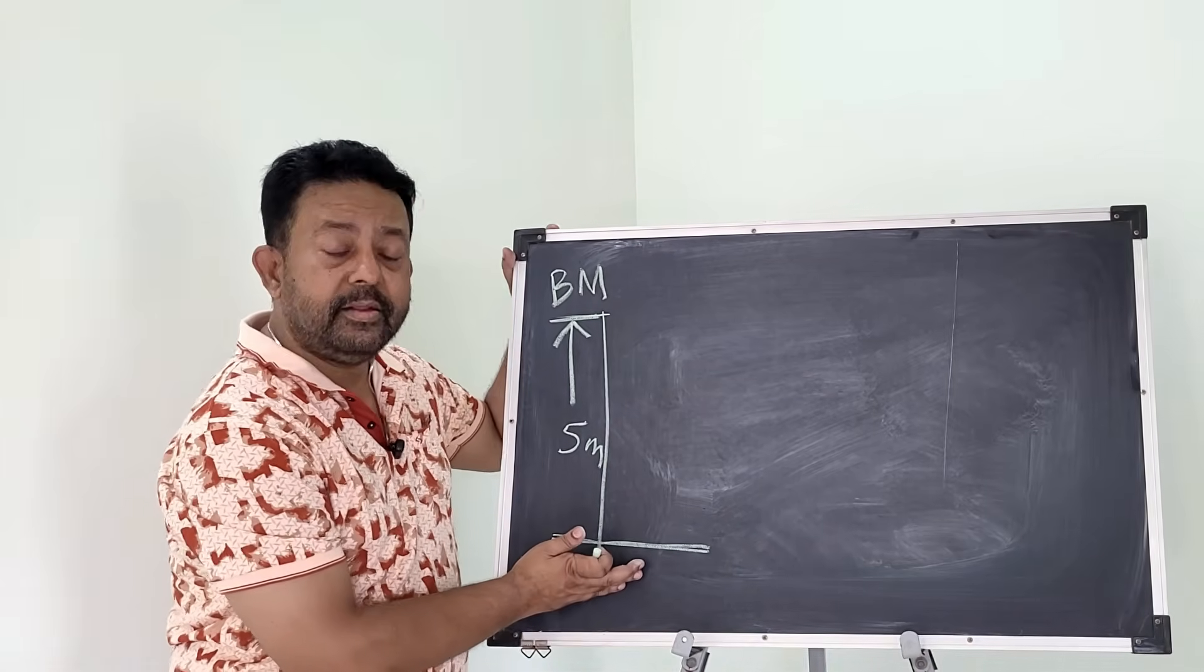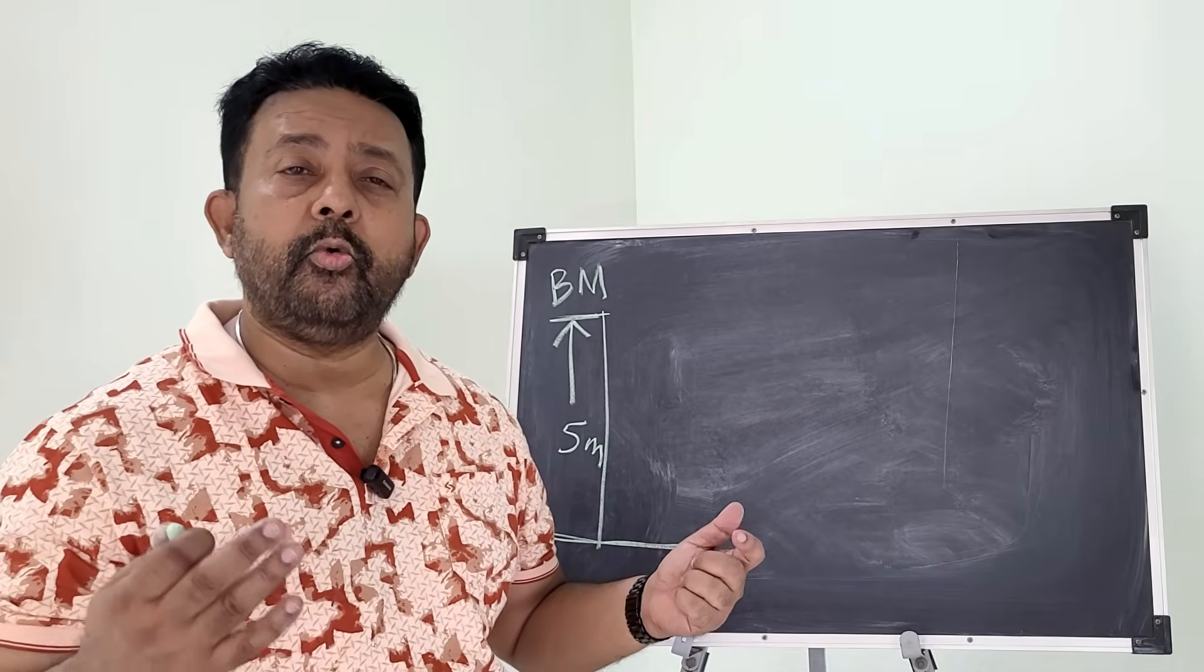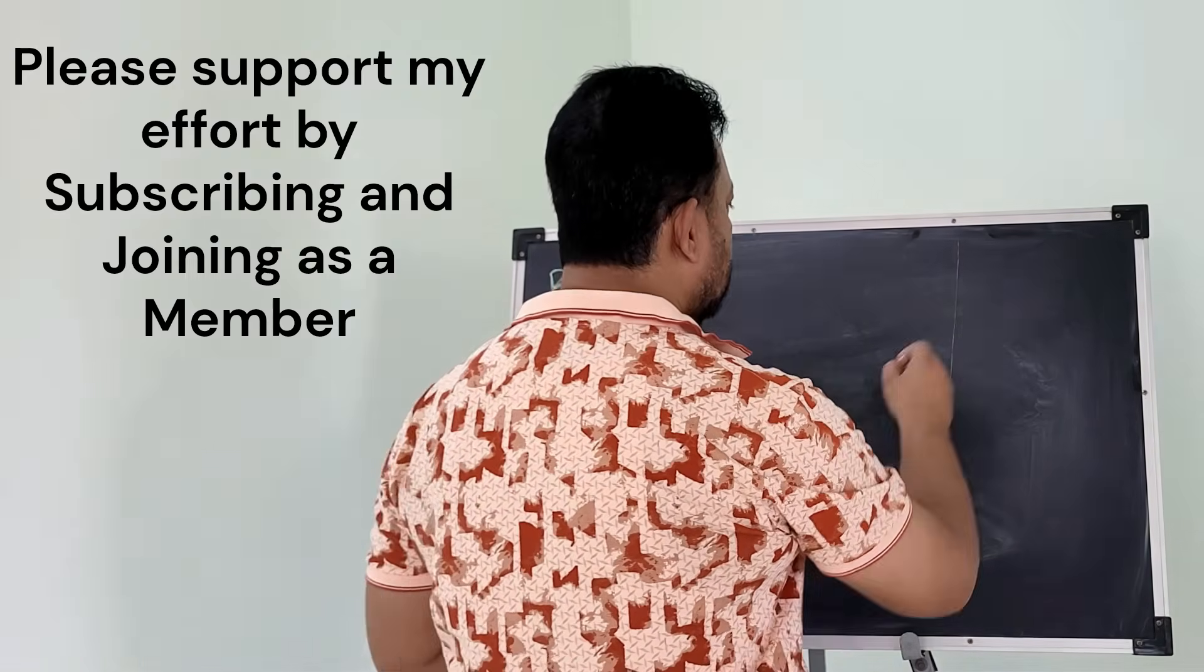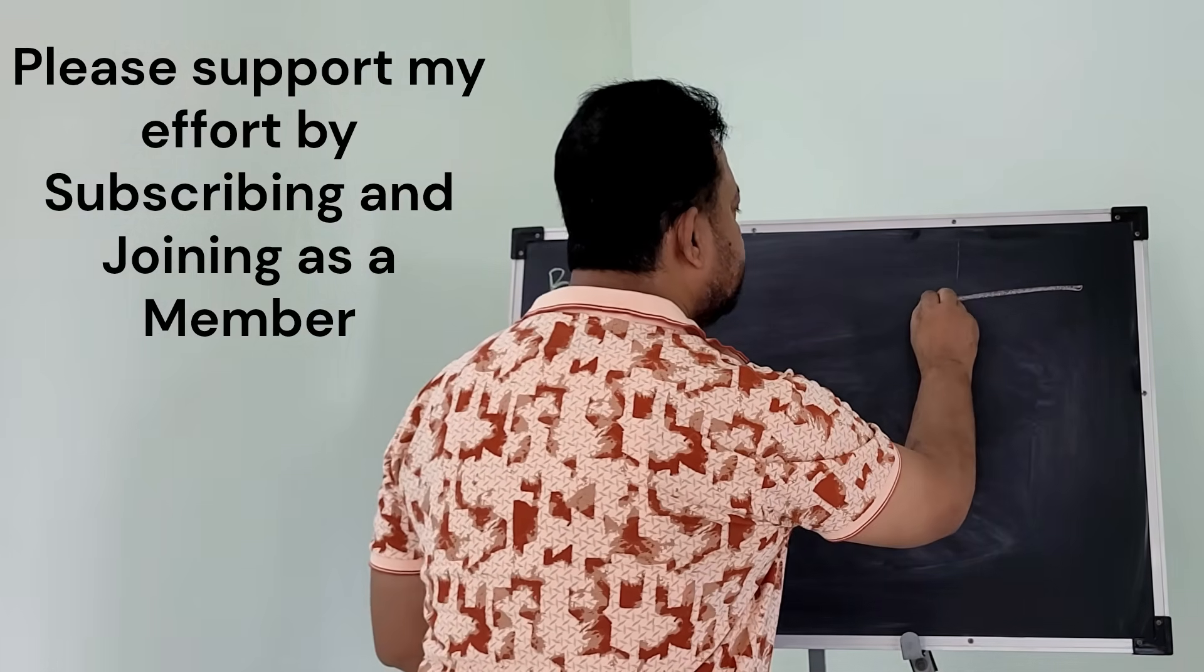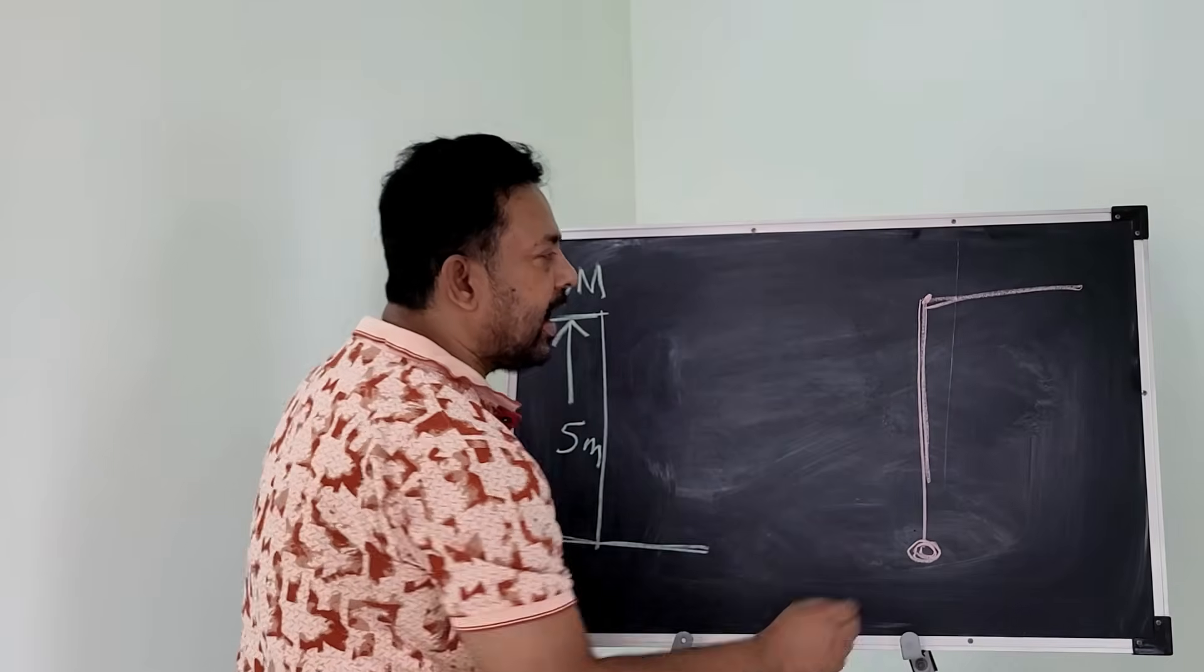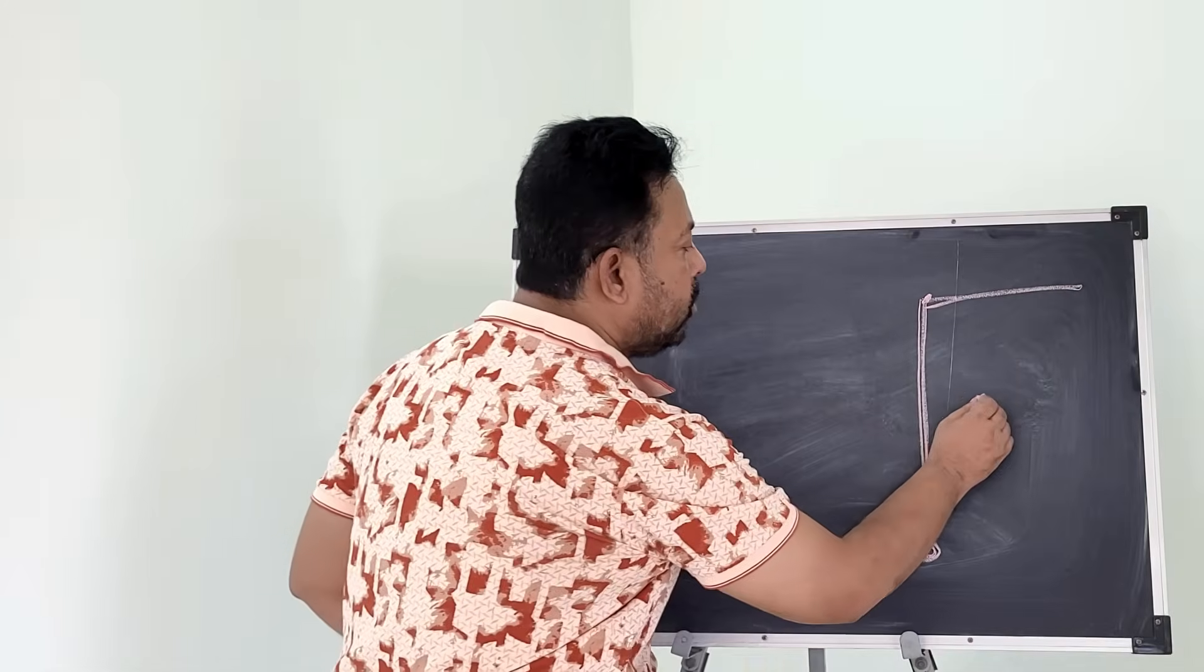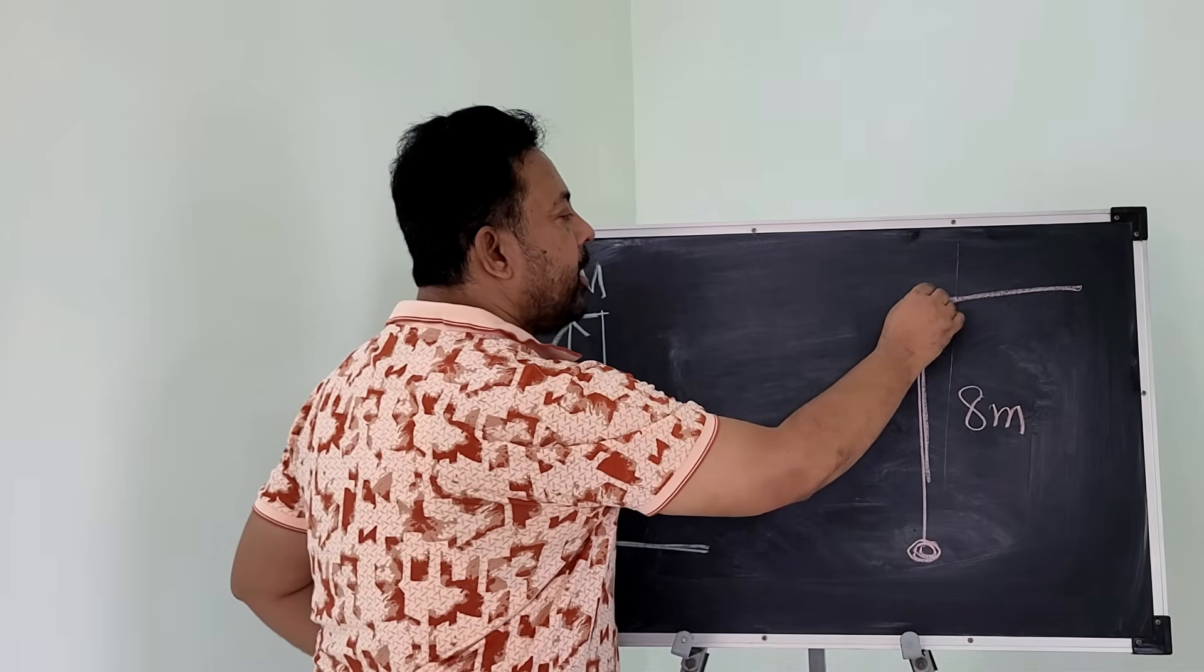So this is the primary thing that we need, and then we need something called a jetty from where to install our tide gauge. So suppose this is a jetty point. From this particular jetty point, if we lower our tide gauge, and this is the sensor of the tide gauge, we need to measure how much we have lowered. Suppose we have lowered the tide gauge eight meters from this point on the jetty.